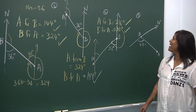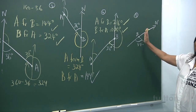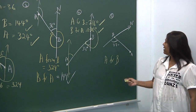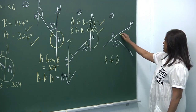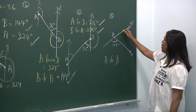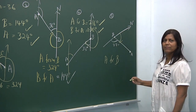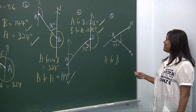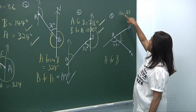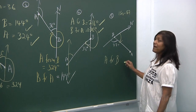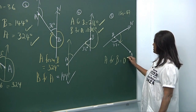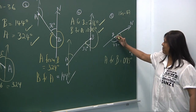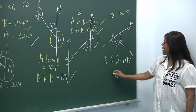Now north is going that way. What is the bearing of A from B? From B as the starting point, go north down — it's a straight line so 180 minus 87. Calculate: 180 minus 80 is 100, then 100 minus 7 is 93 degrees. The bearing is written as 093 degrees, showing the angle moved from 000.